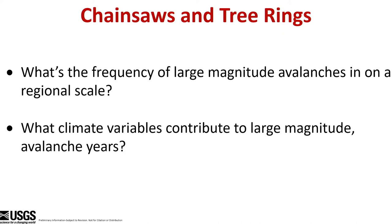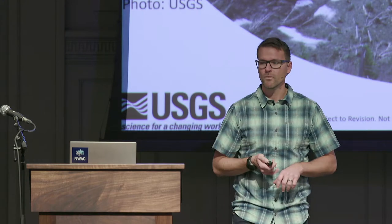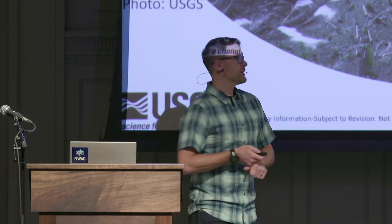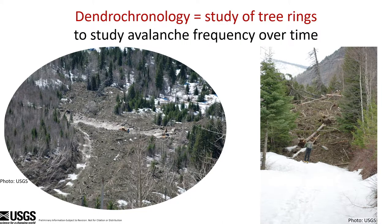So, chainsaws and tree rings. Two of the questions that we're trying to answer: what is the frequency of large magnitude avalanches on a regional scale? I'll explain what regional means and how we are trying to define what region actually means. And then, what climate variables or atmospheric variables contribute to large magnitude avalanche years? Dendrochronology is the study of tree rings, and we're using it to study avalanche frequency over time.